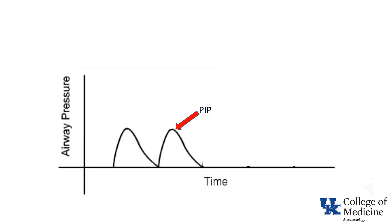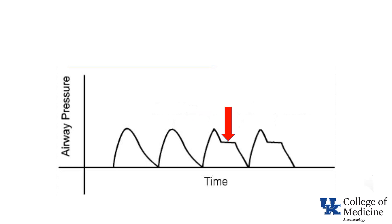This is a graph of airway pressure over time. With standard volume-limited or pressure-limited ventilation, the ventilator achieves its volume or pressure limits and then immediately cycles to the expiratory phase. The maximum pressure achieved — the peak inspiratory pressure — occurs immediately prior to cycling to exhalation. As you can see from the last two waveforms, an inspiratory pause, also known as an inflation hold, has been added at the end of inspiration.